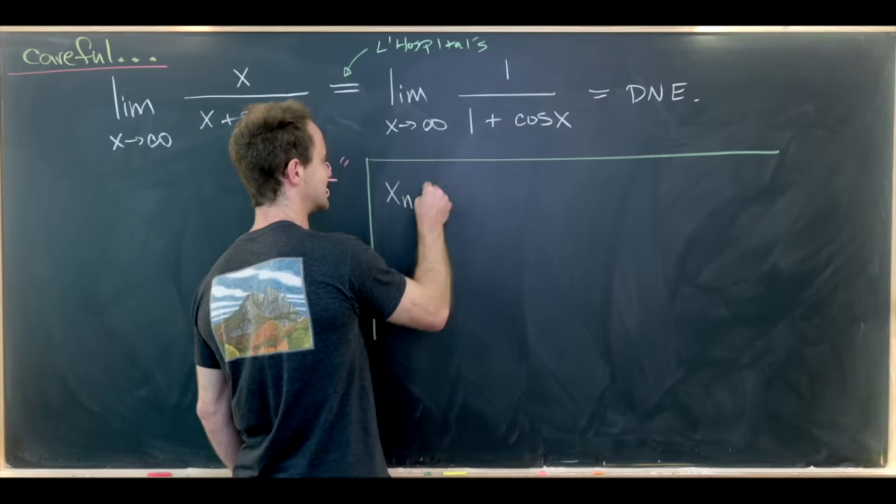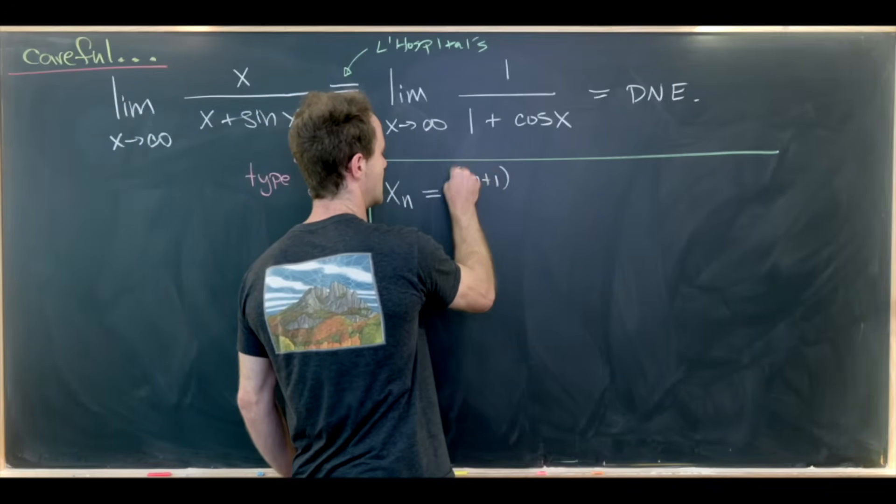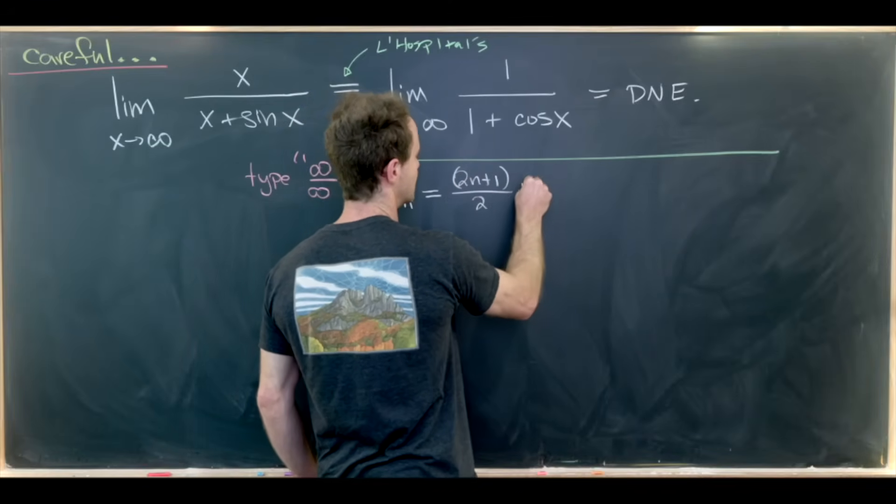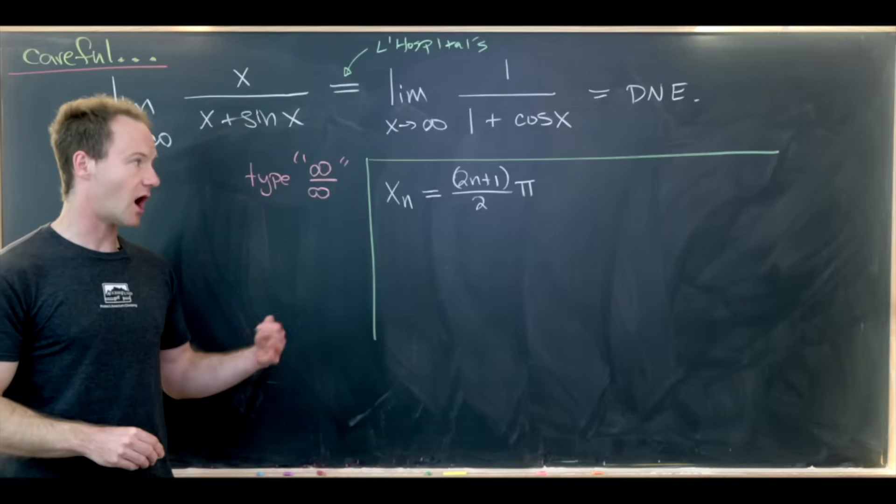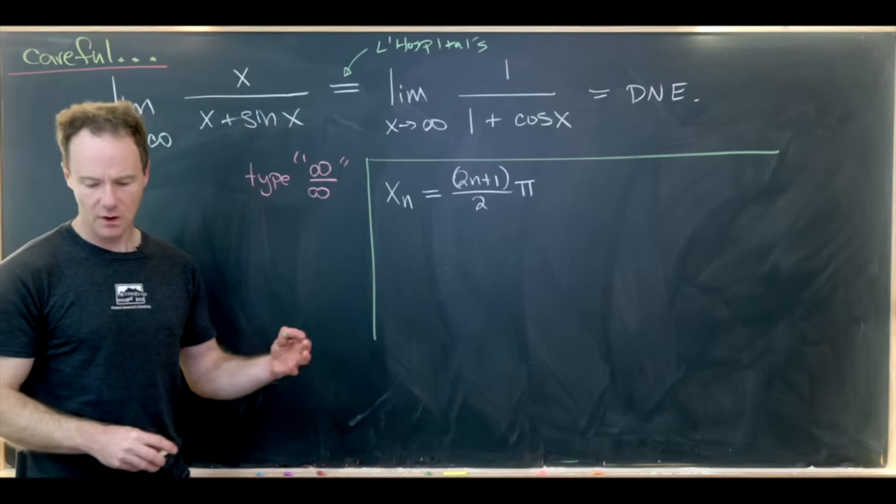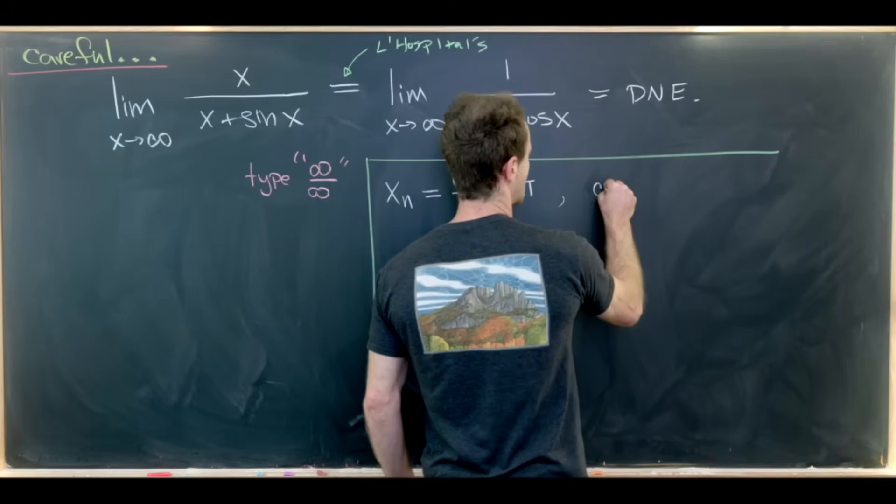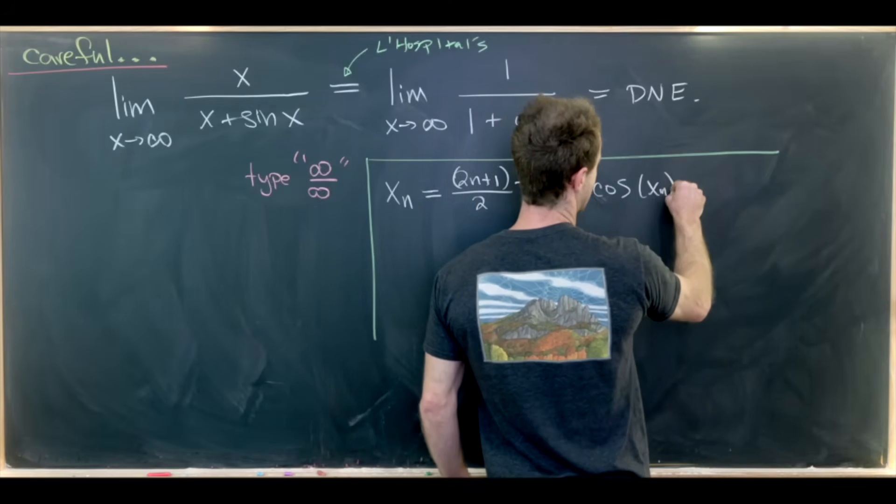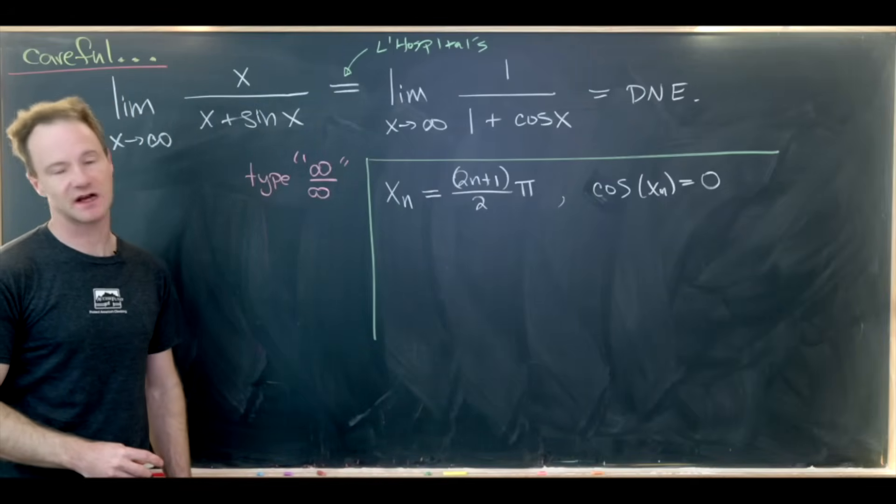So the first limit I'll take is with the sequence xn equals (2n plus 1) over 2 times pi. So let's notice that those are odd multiples of pi over 2. Then notice for all xn we have cosine evaluated at xn is 0. Those are all of the zeros of the cosine function.